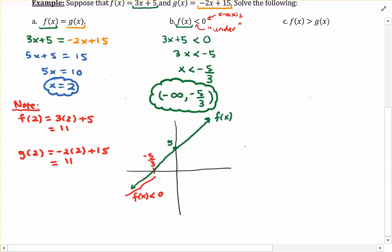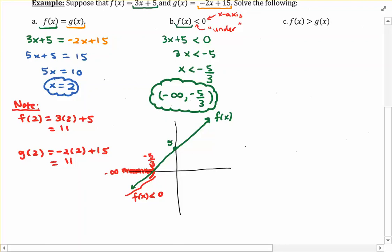In other words, all the y-values on this part of the graph are negative. From a graphical perspective, the answers are all the x-values that correspond to this part of the line — those x-values go from negative infinity all the way up to negative 5 thirds. Since we're dealing with a strict inequality, we use a parenthesis on negative 5 thirds. So in part B, we're finding x-values that make the function graph go underneath the x-axis, producing negative outputs.